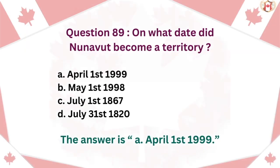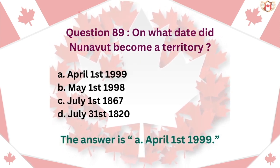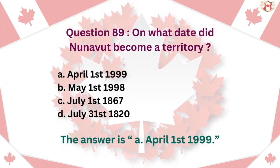Question 89: On what date did Nunavut become a territory? A. April 1, 1999, B. May 1, 1998, C. July 1, 1867, D. July 31, 1820. The answer is A. April 1, 1999.